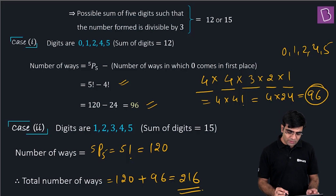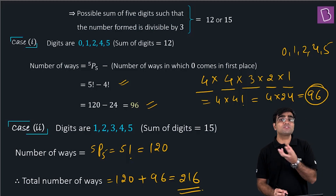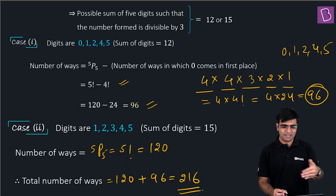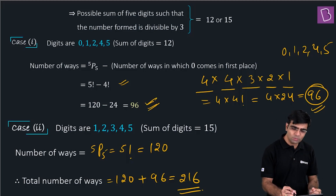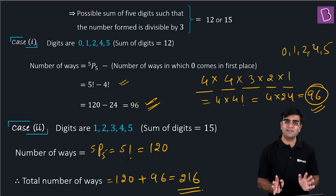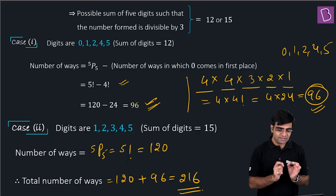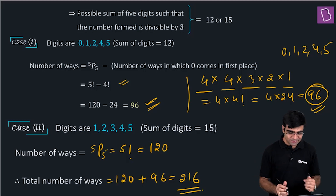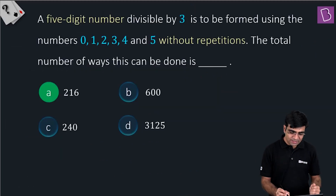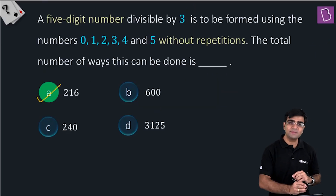Total number of ways = 96 (Case 1) + 120 (Case 2) = 216. The key takeaway: first find combinations of five digits whose sum is divisible by 3, then count arrangements. The answer is 216.